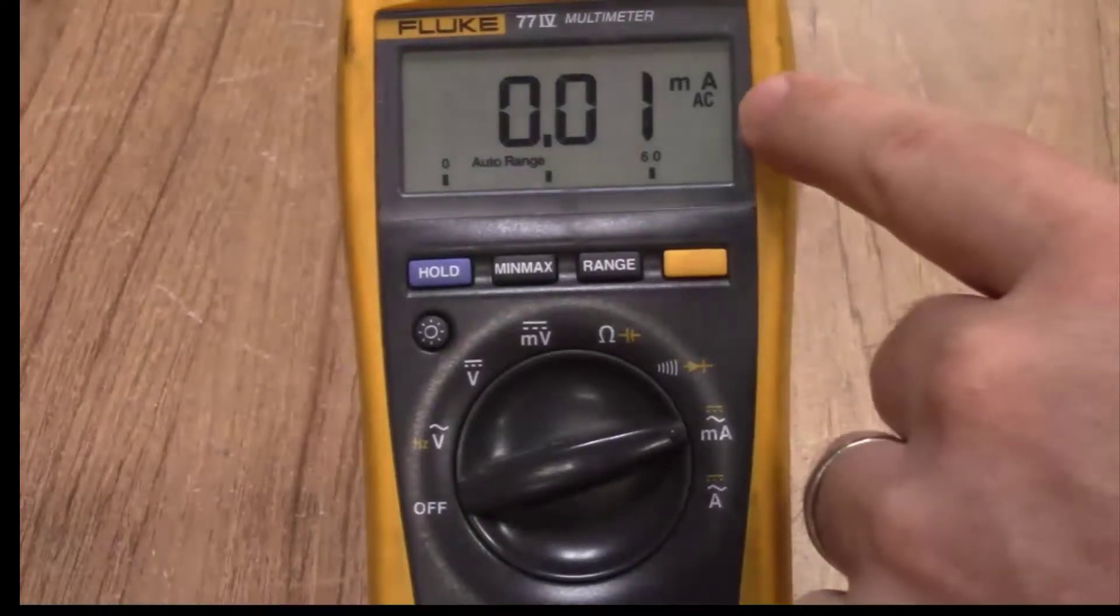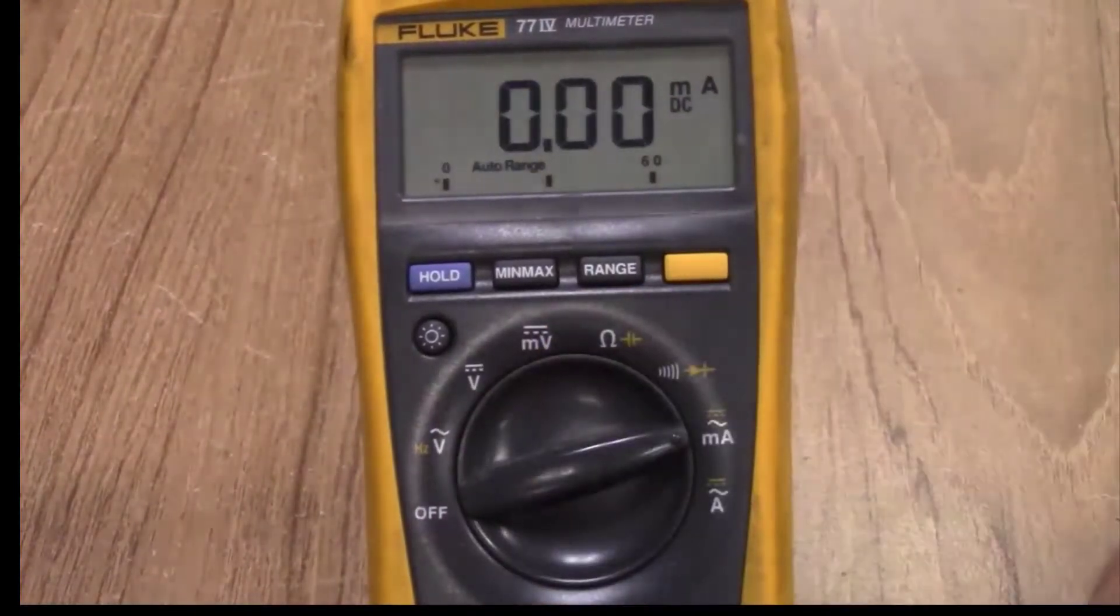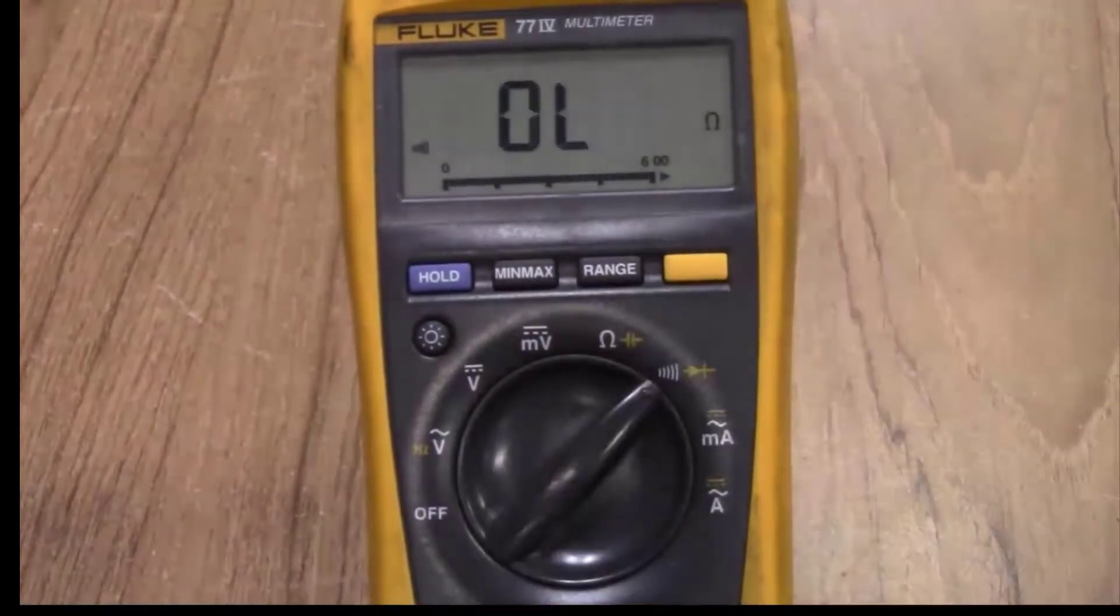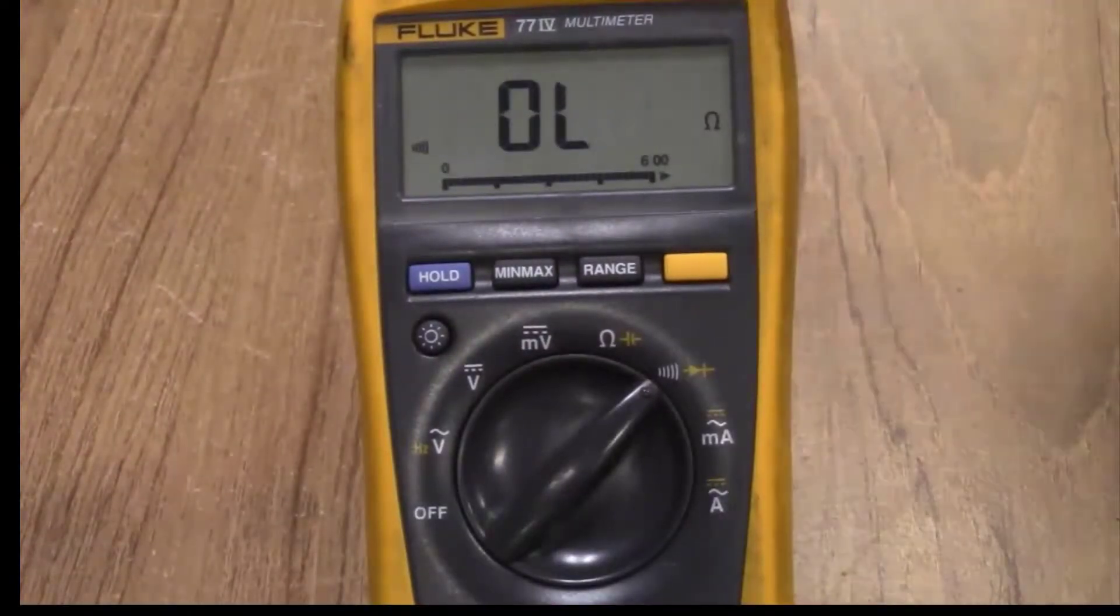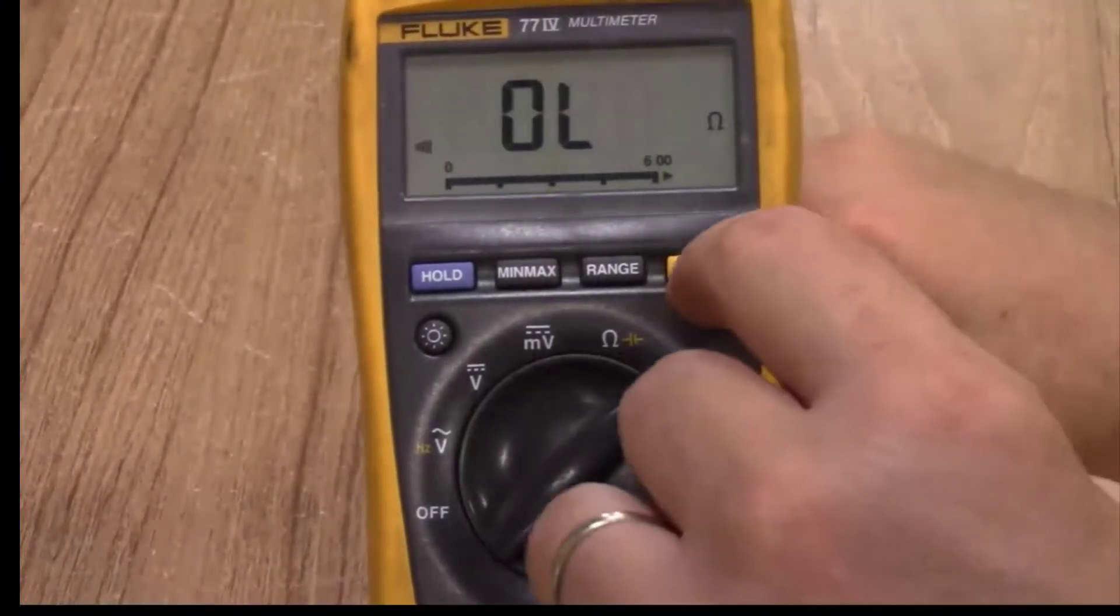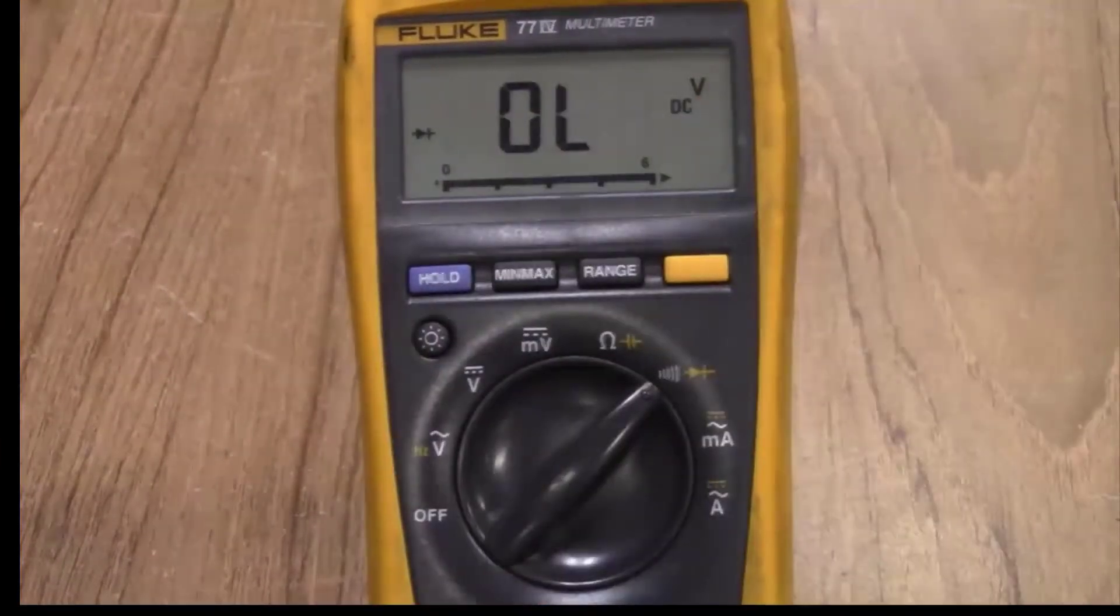And you can see it's already set to AC. If you want to go to DC you push the yellow button. For your continuity and diode it will go to a continuity check and it gives you the buzzer icon. If you push the yellow button you can then see that it changes to a diode check.